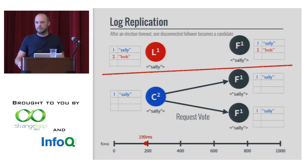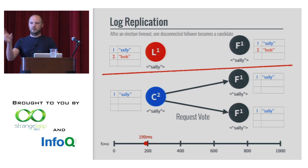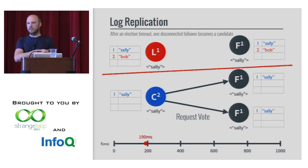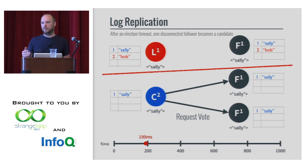Question: what happens when an uncommitted entry like Bob gets rolled back — is it lost, does the client get notified? Yes, the client will get a notification. In GoRaft, clients connect and hold that connection until the command is completed and committed, then they get a response back. If it gets rolled back, they'll get a response saying it was an error. When it actually tries to read the system, you'll never read Bob from the system — it can block the write if it rolls back.